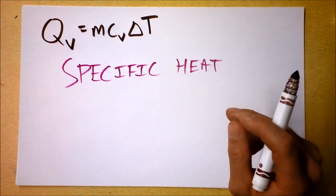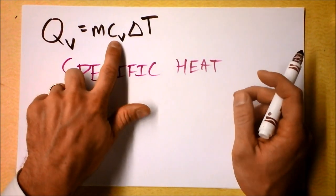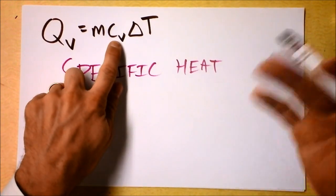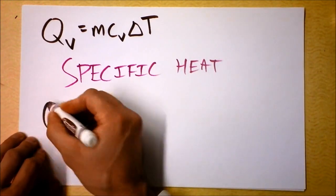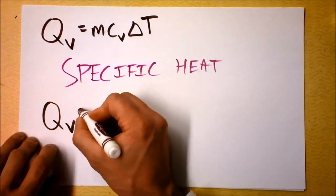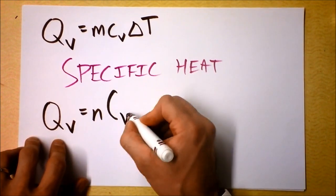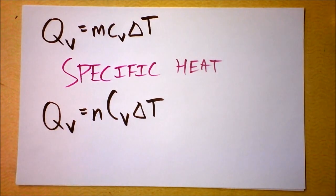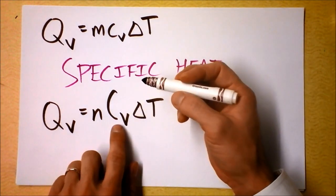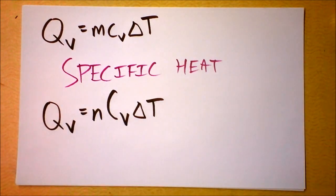So that is the heat that flows in a constant volume process, and this is the mass specific heat, or we'll just call it the specific heat. And then I can write this other equation that is annoyingly similar, but you'll be able to tell the difference. Look at that, isn't that cute? And this is a capital C, and then times delta T.